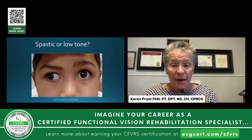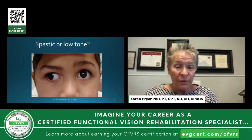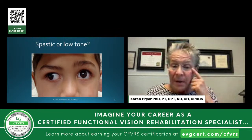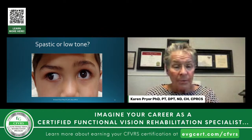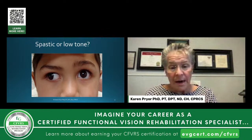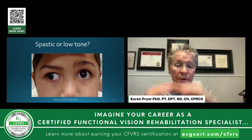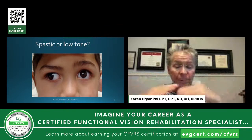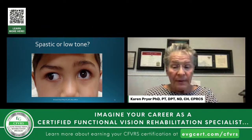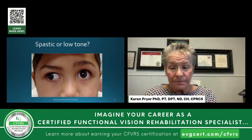Children with high tone — if they're spastic — or those with low tone may have a spastic or hypotonic eye muscle. We'll show you ways to increase or decrease the tone to make it more typical or normal. The eye muscles are striated, just like the body muscles.